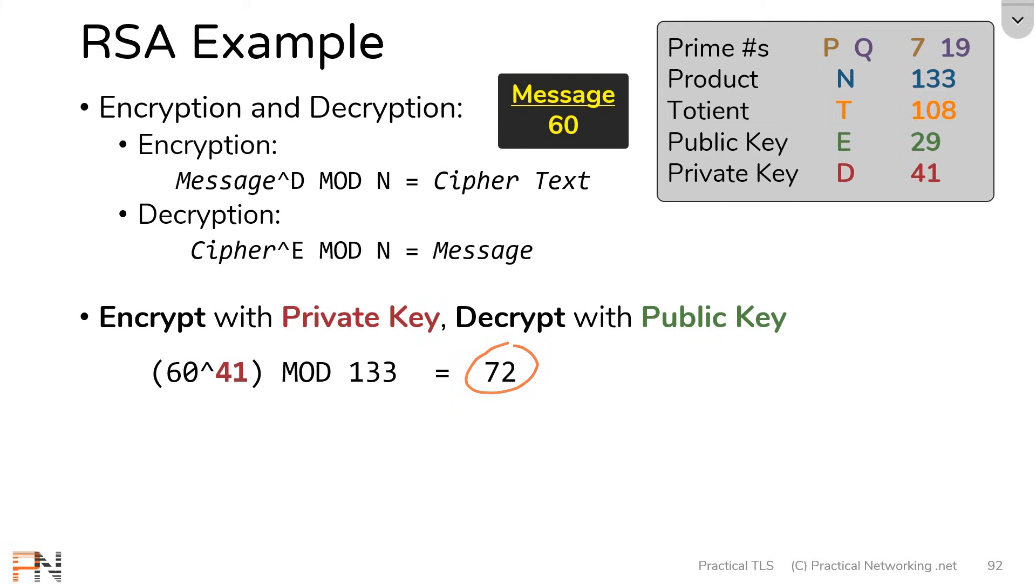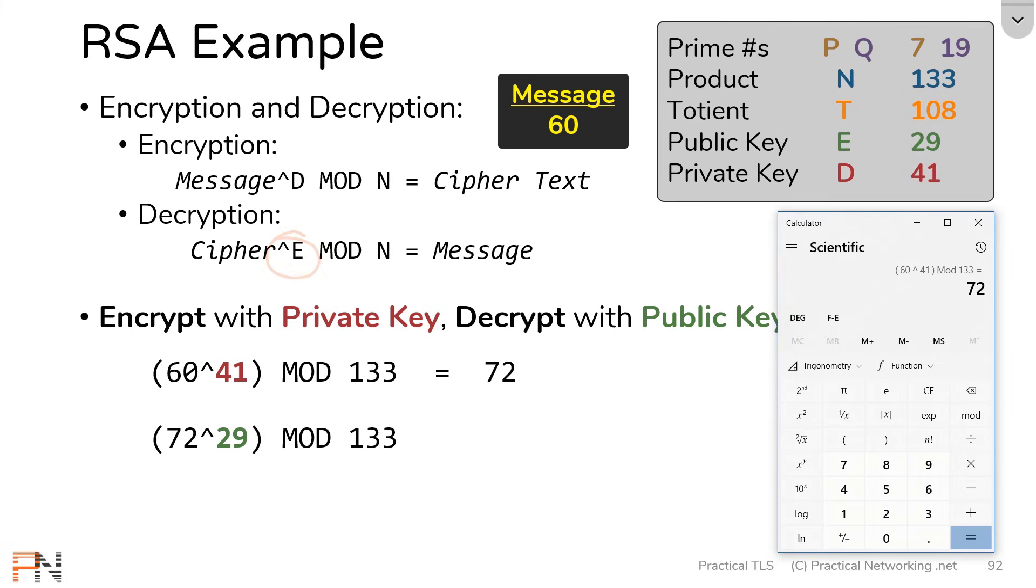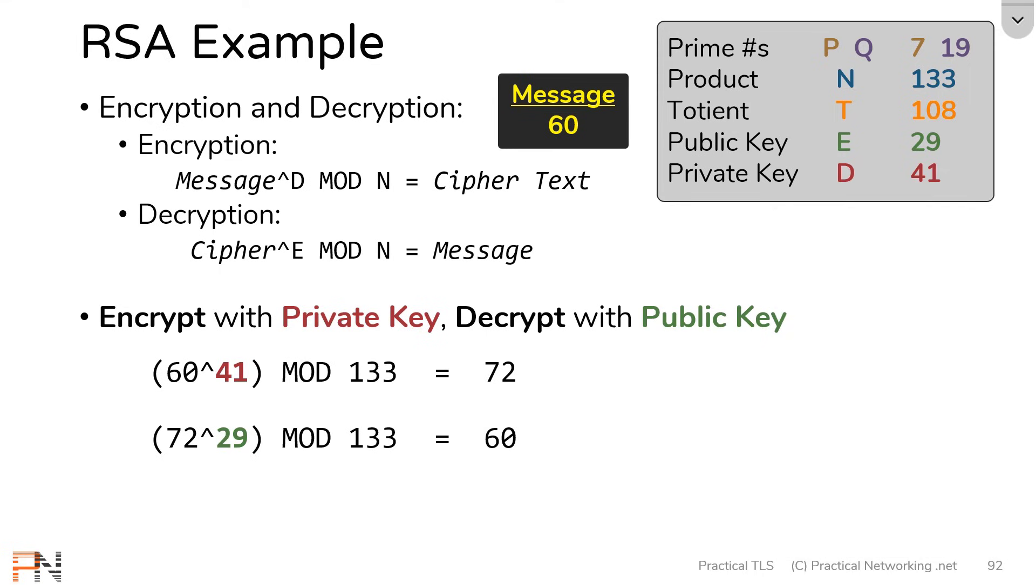This is now the ciphertext after encrypting with the private key. So let's see if I can take that ciphertext and decrypt it with the public key. So again, I'm going to take 72, my ciphertext, and I'm going to raise it to the public key of 29. Then I'm going to figure out the remainder when divided by 133, and you'll see that that lands me back at the original message of 60. So now we have just proven RSA. We've shown you how to generate keys, and we've showed you how to encrypt with the public key and decrypt with the private, and that you can also encrypt with the private key and decrypt with the public. That is the math behind RSA.